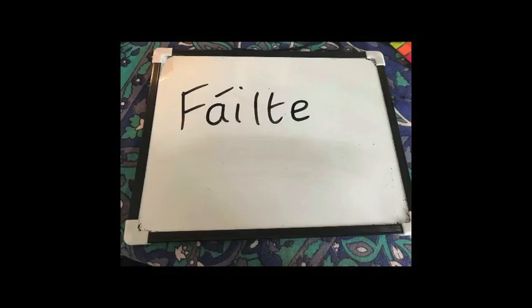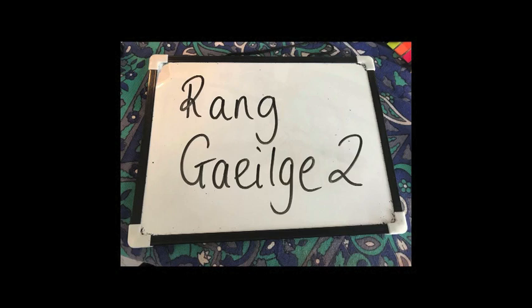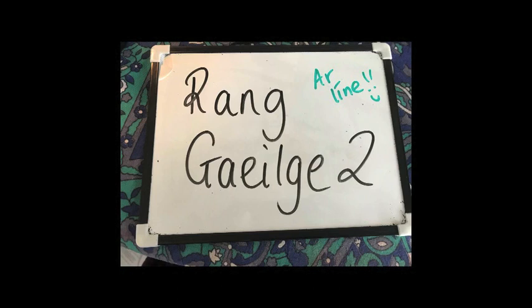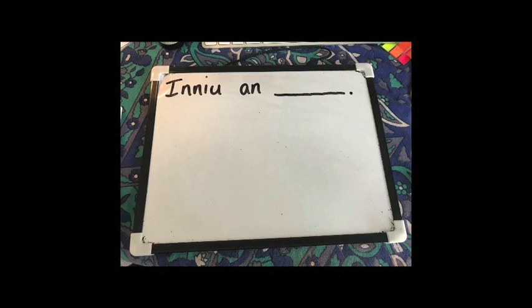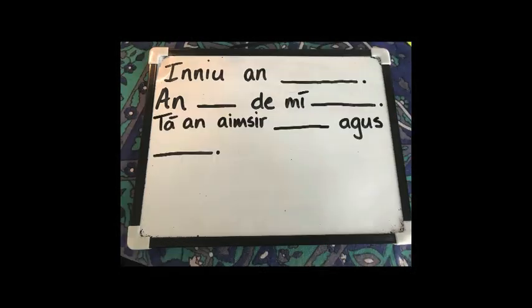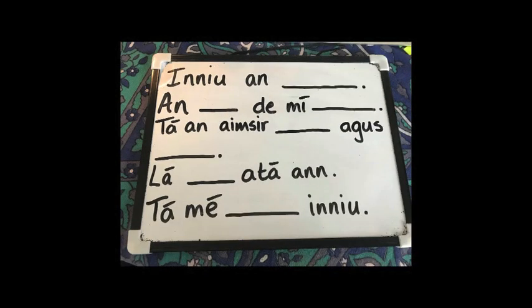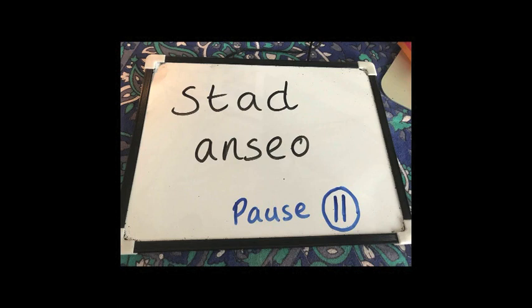Welcome back. I'm going to go through our daily routine like we used to do in class. So: Inniu an blank, an blank, do mé blank. Tá an aimsir blank agus blank. Lá blank a tá ann. Tá an blank. You can pause here and go through that.